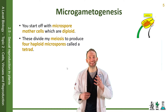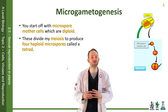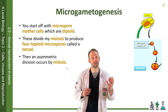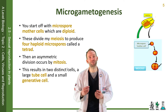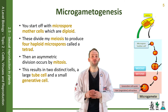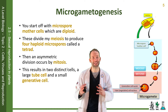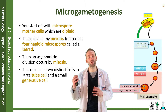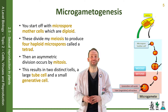Then an asymmetric division occurs by mitosis, resulting in two distinct cells: a large tube cell and a small generative cell. The generative cell becomes engulfed within a membrane-bound compartment in the cytoplasm of the tube cell, so there are actually two haploid nuclei in the same cell.